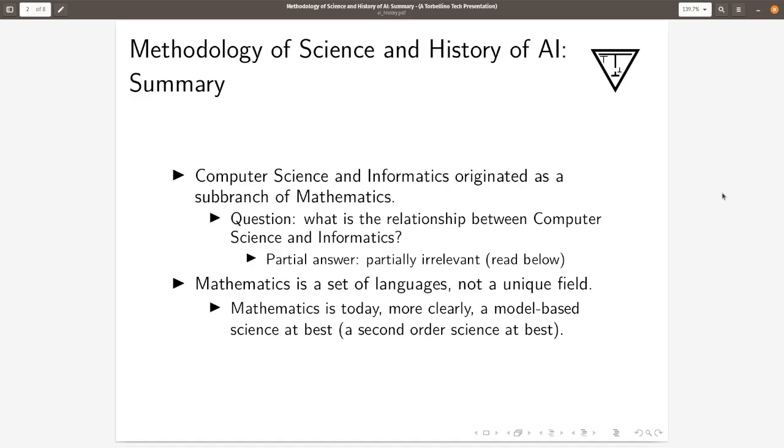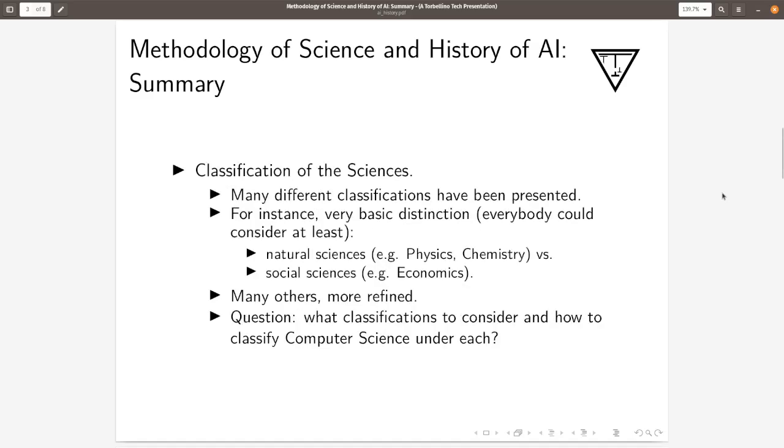Mathematics is today, more clearly than ever probably, a model-based science at best. It is a second-order science at best. Which brings us to another principle: the classification of sciences. We assume that there are different sciences and many different classifications have been presented.